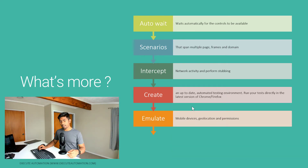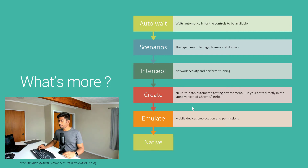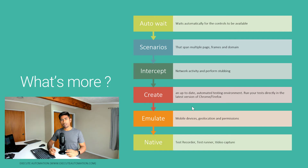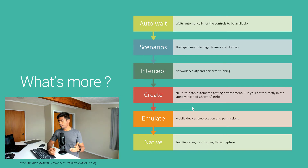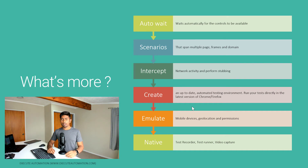Playwright also supports emulation — you can run tests as if on a mobile device like a Samsung mobile, iPhone, or iPad. Finally, Playwright has a native test runner called Playwright CLI, the Playwright command-line tool. It includes a test runner, test recorder, and video capture. If a test fails, you can review it in the captured video. These are all very modern features available in Playwright by default.